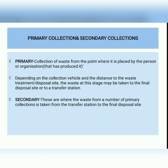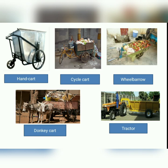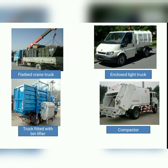In both primary and secondary collection, transportation vehicles are required. Here you can see the vehicles used for primary collection: handcart, cycle cart, wheelbarrow, donkey cart, and tractor. The choice of vehicle is dependent on the situation, location, and the amount of waste to be transported.